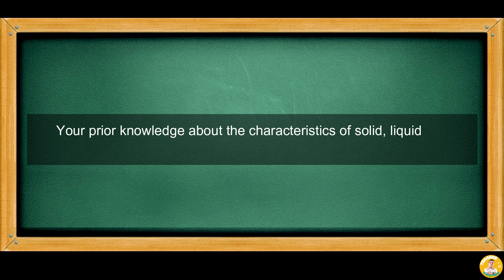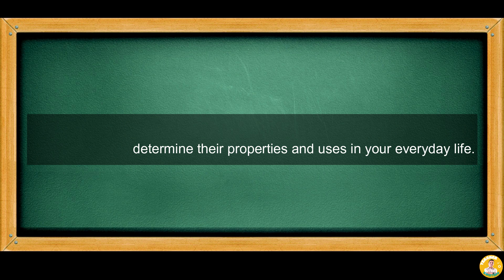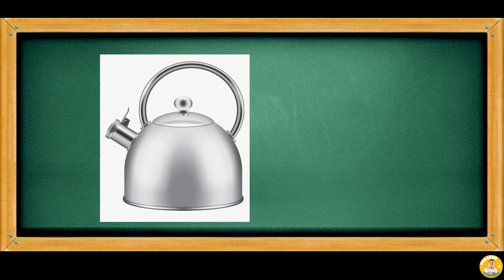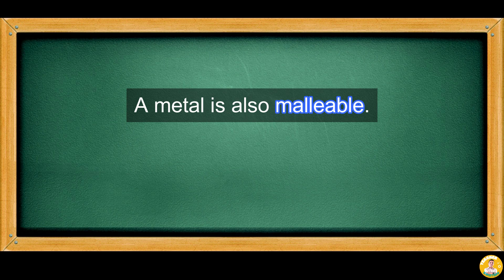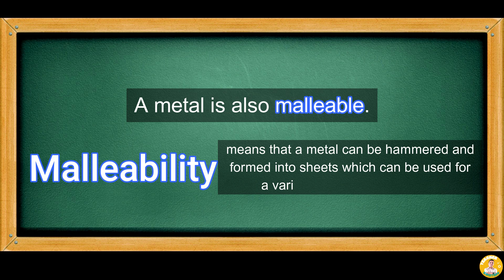Your prior knowledge about the characteristics of solid, liquid, and gas will help you determine their properties and uses in your everyday life. You can describe a metal kettle by saying that it is strong and durable. A metal is also malleable. Malleability means that a metal can be hammered and formed into sheets which can be used for a variety of different purposes.